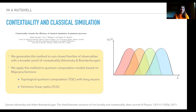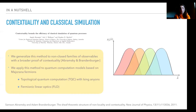So what does 'closed' mean? In a closed sub-theory, if I have two observables that are allowed in the sub-theory, the product of these two observables must also be in the sub-theory. And this is not the case for many families of observables. So what we did is we generalised this idea to non-closed families of observables with a broader proof of contextuality.